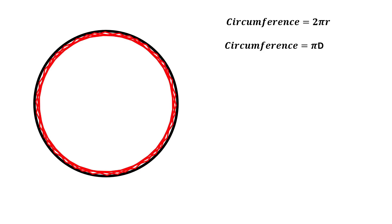As the number of sides of an inscribed polygon increases, the perimeter increases and approaches the circumference of the circle. An important relationship exists between the circumference and the diameter of a circle. Therefore, diameter must be known to solve circumference.